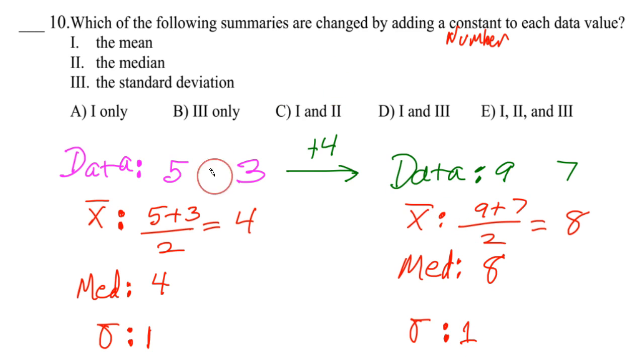So taking a look here, when we add 4, did the mean change? Well it went from 4 to 8, so yes the mean does change. Did the median change? Yes the median changed. But oddly enough the standard deviation did not. So only 1 and 2, so C is the correct answer.